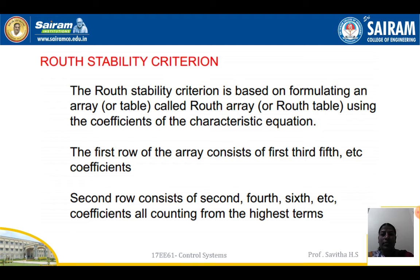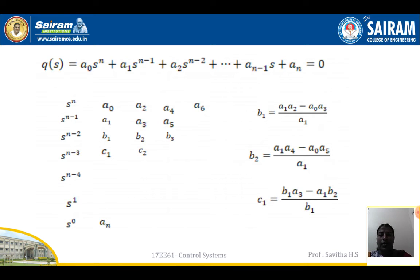Routh stability criteria. The Routh stability criterion is based on formulating an array called the Routh array or Routh table using the coefficients of the characteristic equation. The first row consists of the first, third, fifth, etc. coefficients. The second row consists of the second, fourth, sixth, etc. coefficients, all counting from the highest term. For example, for Q(s) = a0*s^n + a1*s^(n-1) + a2*s^(n-2) + ... + a(n-1)*s + an = 0, the row for s^n contains a0, a2, a4; and the row for s^(n-1) contains a1, a3, a5.